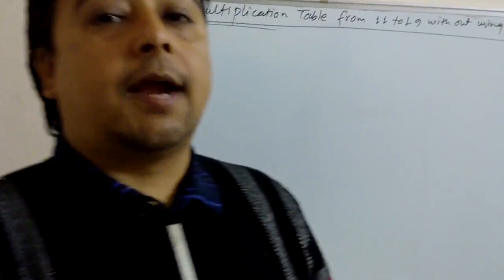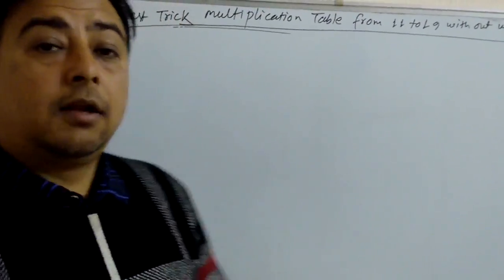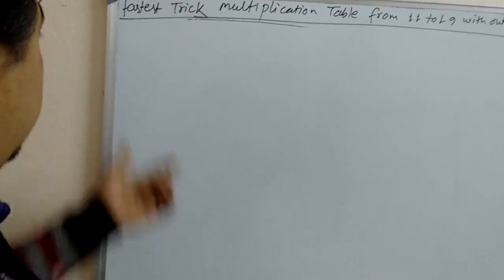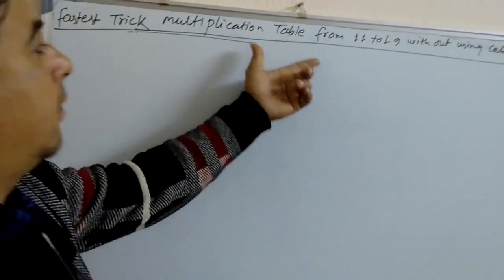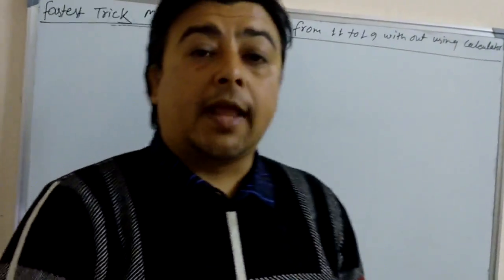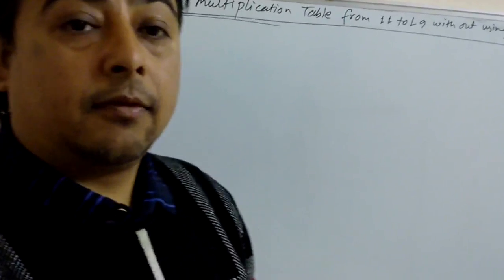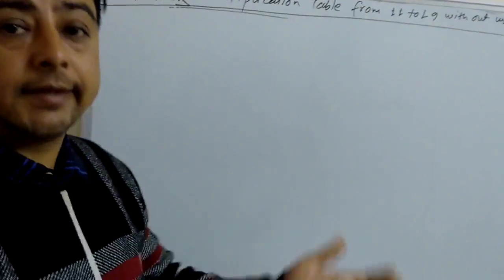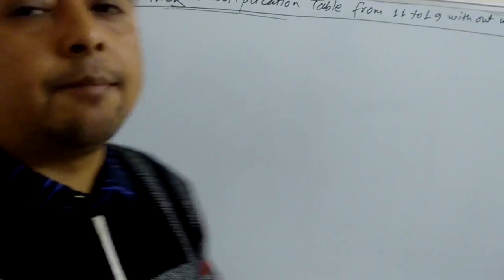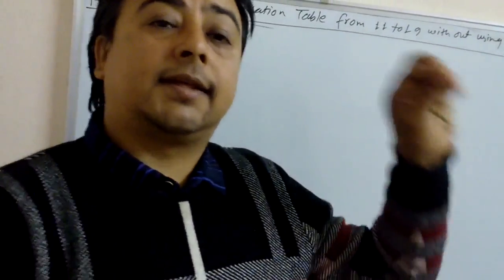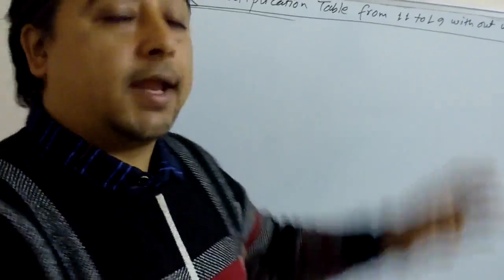Hi friends, I'm Mithil Sramdakal. Welcome to my channel. Today we are going to learn the fastest trick for multiplication tables from 11 to 19 without using a calculator. Is it possible? Yes, it is possible. By using the same method, we can apply it from the 11 to 19 table.